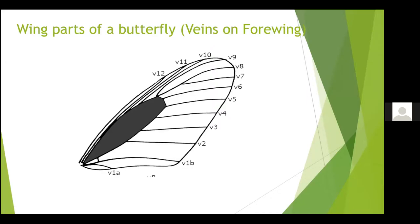The next slide shows the forewing of a butterfly with its various veins. The forewing has got 12 veins. Out of that there is a vein called 1A and 1B and there is 2, 3, 4, 5, 6, 7, 8, 9, 10, 11 and 12. The vein number one always starts from the wing base and all other veins start from the cell.